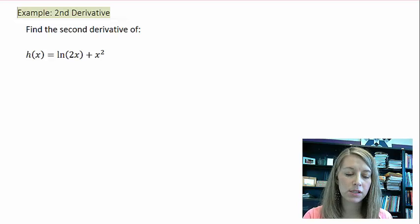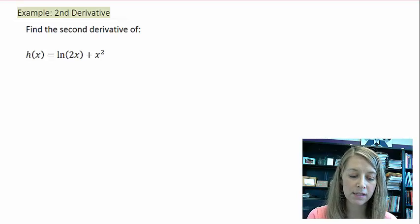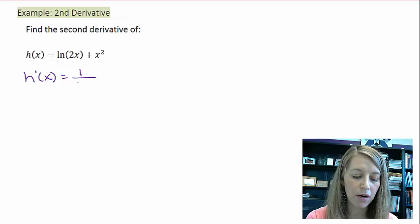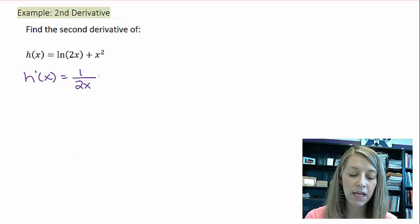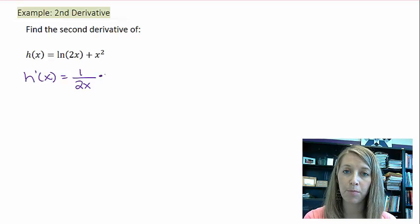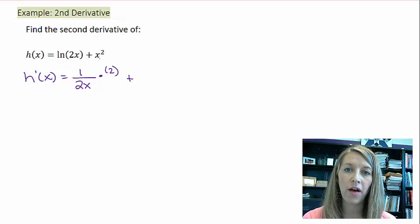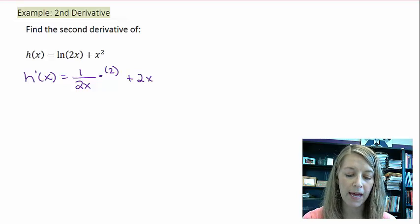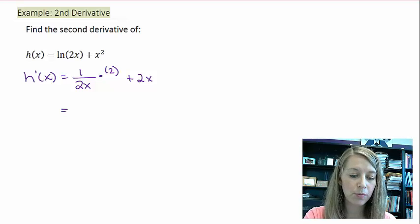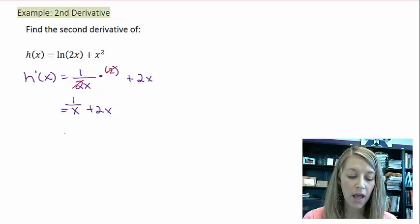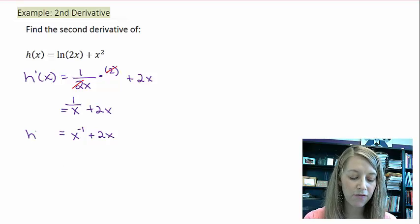Alright, well we just need to recall what the derivative of natural log of x is. And we know that the derivative of that is 1 over my inside part, where that's 1 over 2x. And then it's times the derivative of the inside part, so here's my chain rule, which is just 2. And then plus the derivative of x squared gives me 2x. And so, this one is going to be super easy to do, because my 2's are going to cancel out. And that just gives me 1 over x plus 2x. If you want to put this in power notation, that's x to the negative 1 plus 2x. So, that's my first derivative.